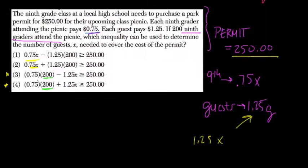So both choices here, they take 200 and multiply by 0.75 because they want to know how much money they've already made and how much is left. So here, you're going to add 1.25X because that's saying, well, we have $0.75 times 200, the number of 9th graders.